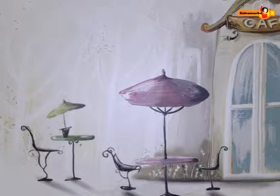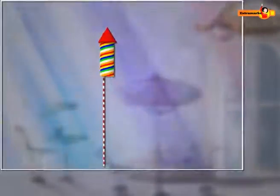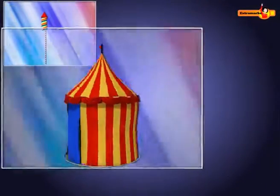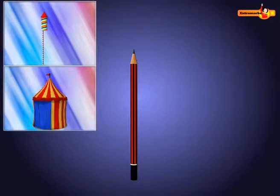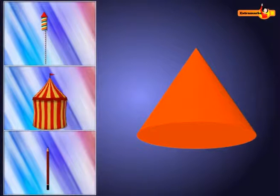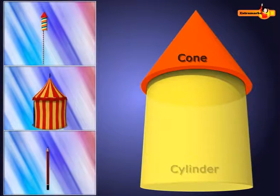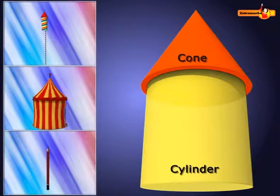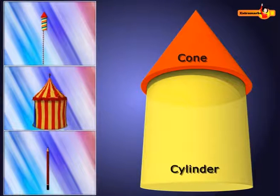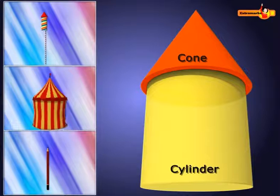In our daily life we observe many objects like rockets, tents, pencils, etc. What do you observe in these objects? These objects are formed with the combination of a cone and a cylinder. Do you know how to find the surface areas of such type of solids?